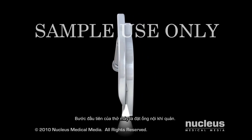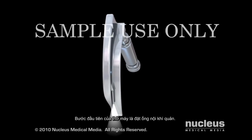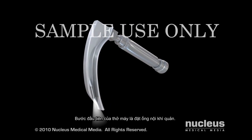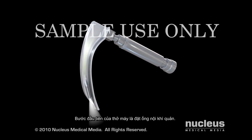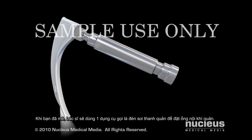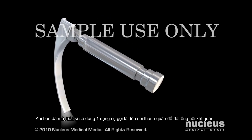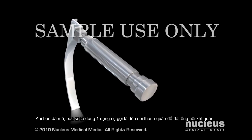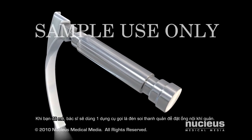The first step in mechanical ventilation is called endotracheal intubation. Once you are asleep, your doctor will use an instrument called a laryngoscope to perform the intubation.